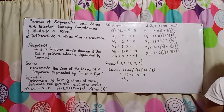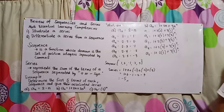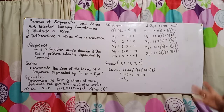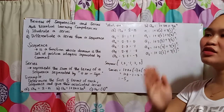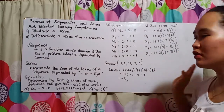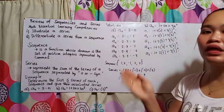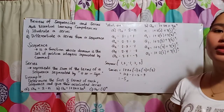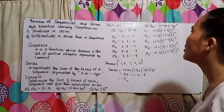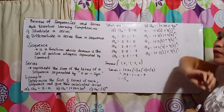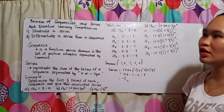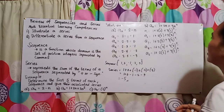Then we compute each one. We follow the order of operations: parentheses, exponent, multiplication, division, addition, and subtraction — PEMDAS. Since there are exponents, we handle those first. So 1 squared is 1, 2 squared is 4, 3 squared is 9, 4 squared is 16, and 5 squared is 25.